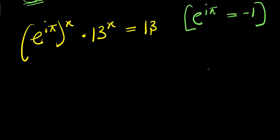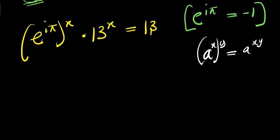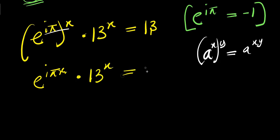Now if you have a to the power x, raised to the power y, this equals a to the power xy. So let's multiply this: we have e to the power of i times pi times x, times 13 to the power x, equals 13.